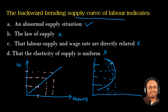As we can see in the diagram of the backward bending supply curve of labour, option A is the right answer. Thank you for watching. See you in the next video. Bye bye.